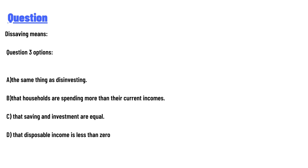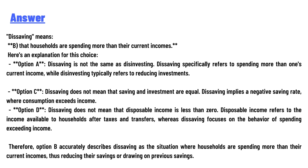Option A: dissaving means households are spending more than their current incomes. Option B: dissaving means investing. Option C: their saving and investment are equal. Option D: their disposable income is less than zero. The answer to the question is this: dissaving means households are spending more than their current incomes.